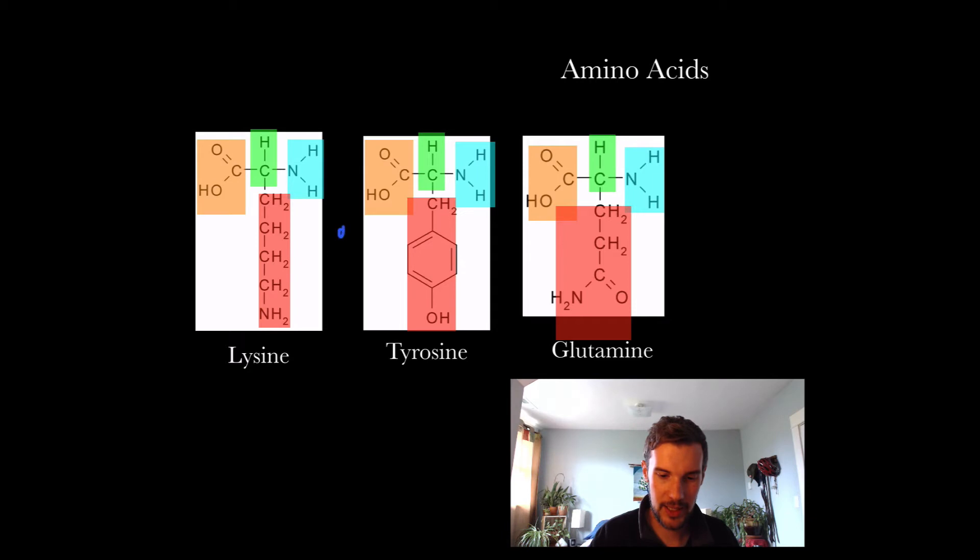The lysine bonds to the tyrosine, the tyrosine bonds to the glutamine, and so on. That unique order means that it's going to be a certain type of protein. If we change this order, it could potentially be a completely different protein.